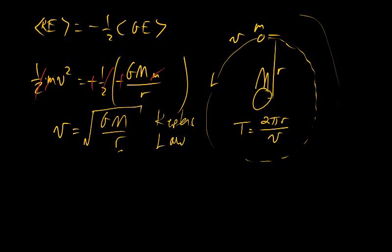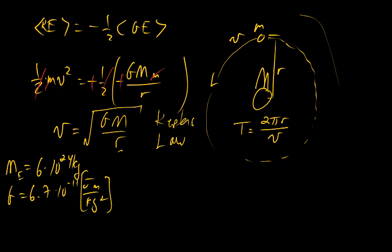Let me go through an example of how this could be used. Imagine that we have the Earth, and the Earth has a mass of about 6 times 10 to the 24 kilograms. The gravitational constant, if you recall, is 6.7 times 10 to the negative 11 joule meter per kilogram squared. And let's imagine that we're talking about an object that's going to orbit at about 380,000 kilometers, or about 3.8 times 10 to the 8 meters. This is, in fact, about the distance to the moon.